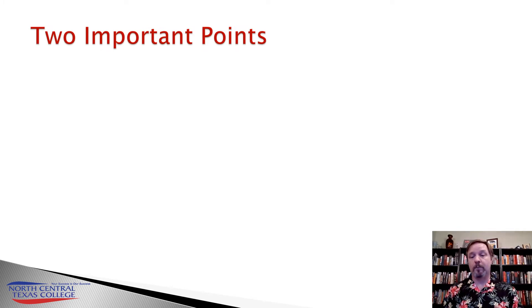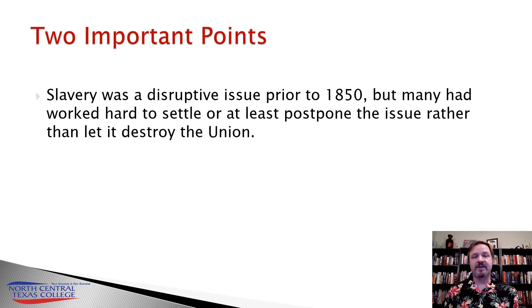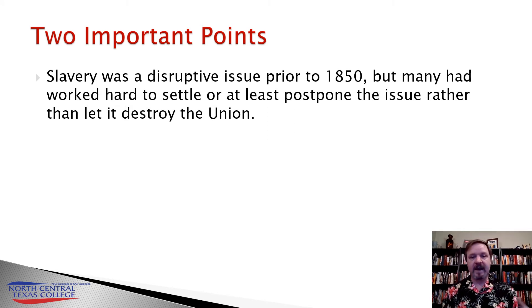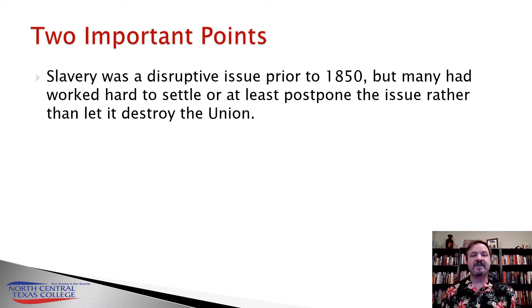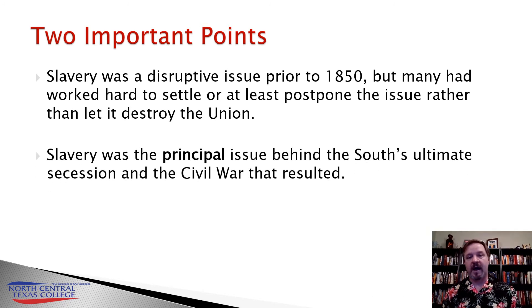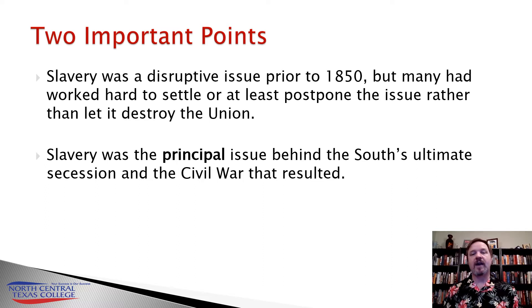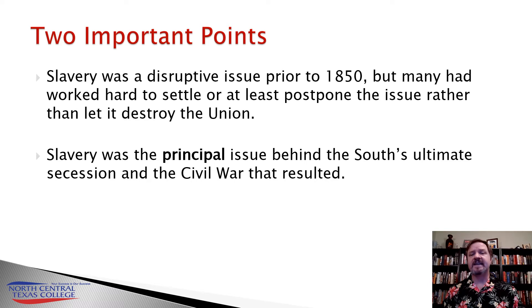Along with this, we have two important points to consider. First, slavery was a disruptive issue prior to 1850, but many had worked hard to try to settle it — or at least postpone it — rather than let it destroy the union. People like Henry Clay kept trying to push it off to the next generation. The second important point is that slavery was the principal issue behind the South's ultimate secession and the civil war that resulted. No matter what other excuse you see people give, you can always trace it back to slavery.